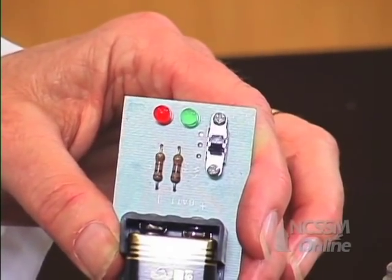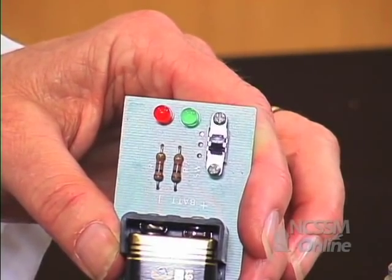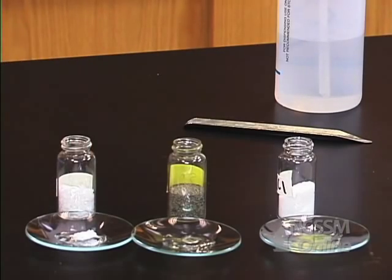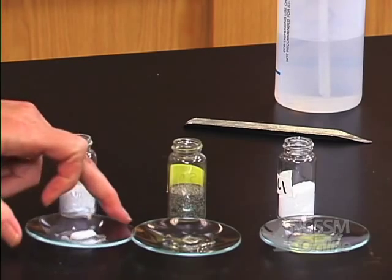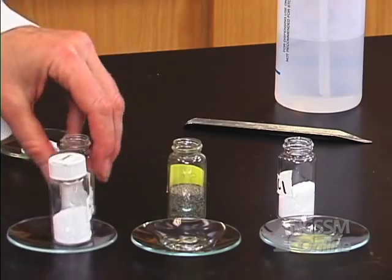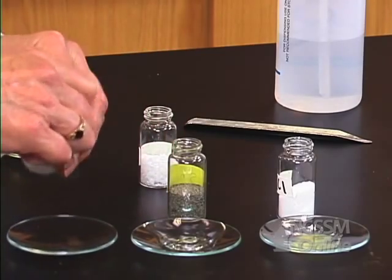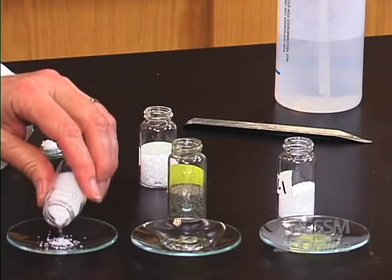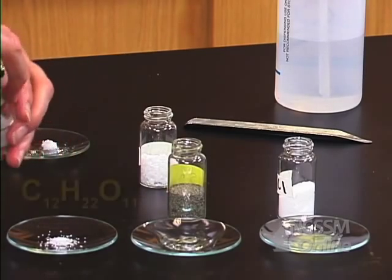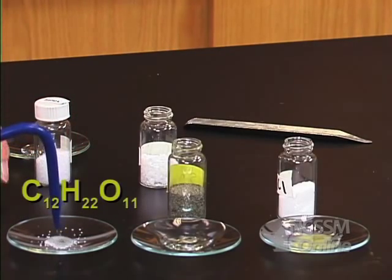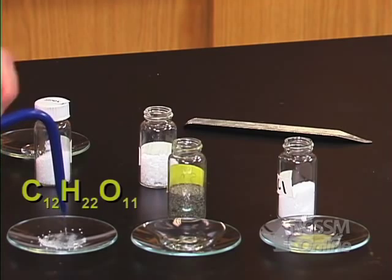We know there are some covalent compounds that are water soluble, like sugar, because you put sugar in your tea or in your Kool-Aid. So let's try sugar and see what it does if we dissolve it in water. Okay, so our sugar is dissolved in water.